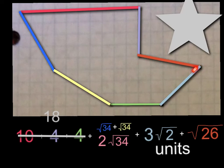So the final answer is 18 plus 2 square roots of 34, plus 3 square roots of 2, plus the square root of 26 units. That is the perimeter of this shape.